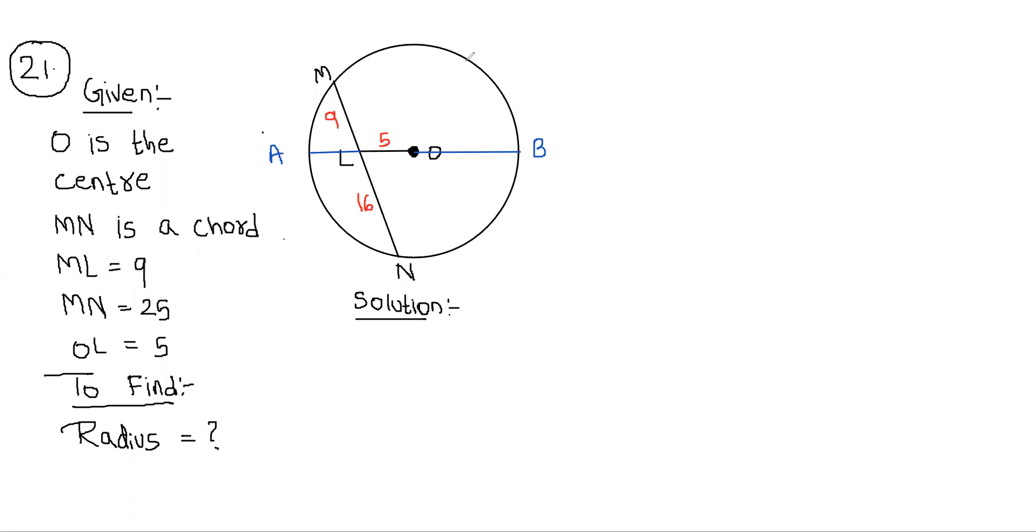Now, if we assume, let AL be X. So what will happen to OB? When you look at this figure, O is the center. If O is center, OA is the radius. OB is also the radius. That means OA is equal to OB. And if we assume AL as X, what will be the entire OA? We will look at the figure: X and 5. That means OB is also X plus 5, radii of the same circle.